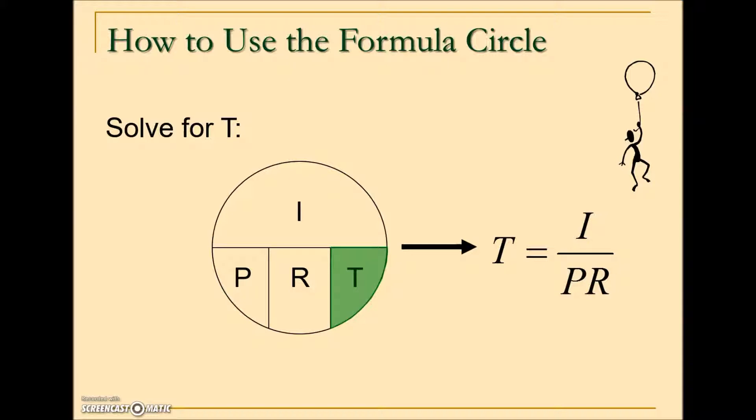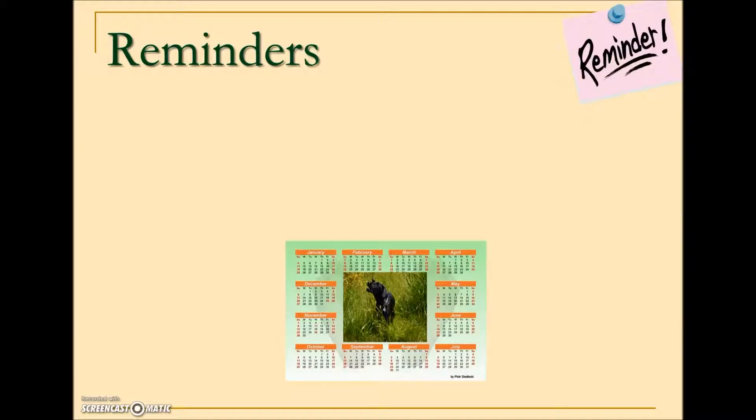We can also use this formula circle to calculate interest from the first section. If you cover up interest, that leaves the principal, rate, time adjacent to one another, and we multiply those three values together. So let's look at some examples.